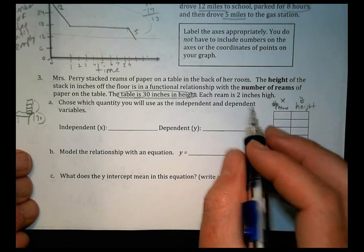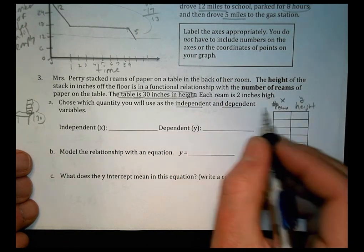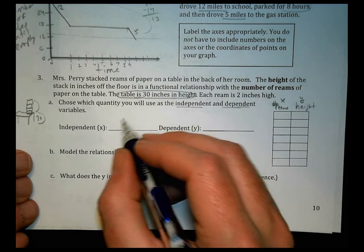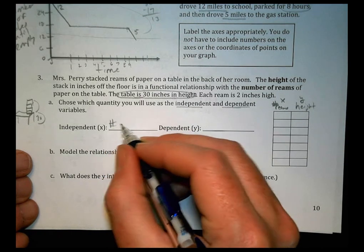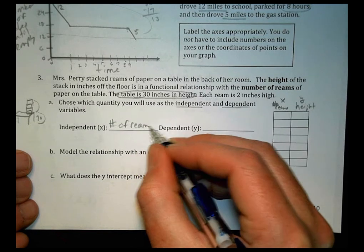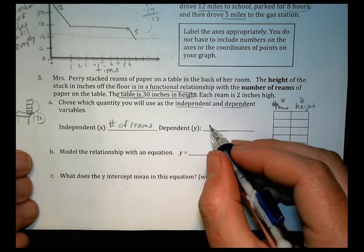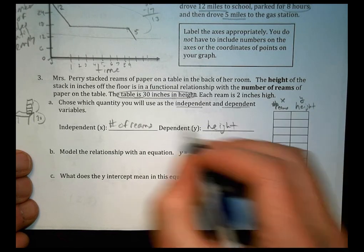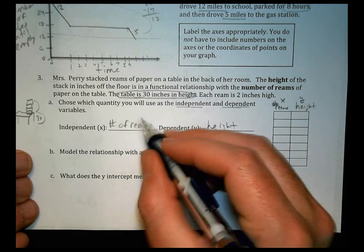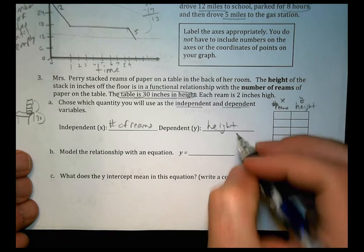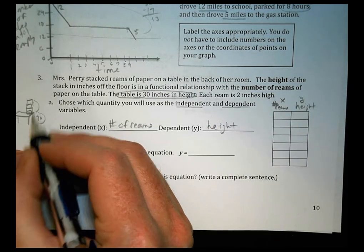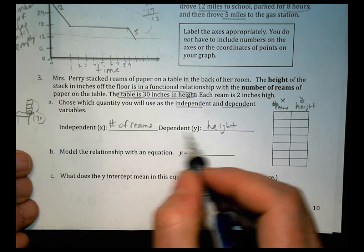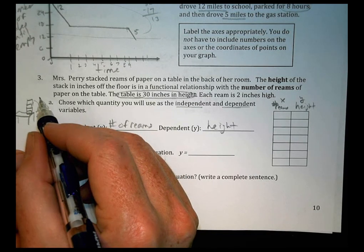So choose the quantity you'll use as the independent and dependent variable. Well, our independent is going to be our number of reams of paper. And the dependent is going to be the height. Because whatever the height is going to be depends upon how many reams of paper we use. If I change this, it will change the height. If I take away a book, it changes the height. So independent is the books. What depends, the dependent is the overall height.